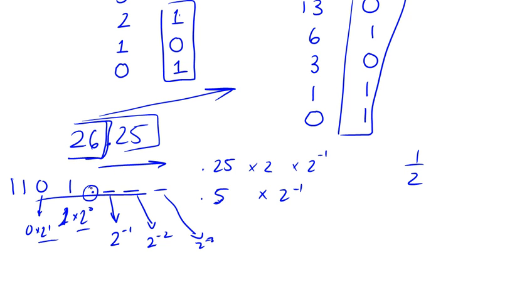And the digits that are to the right of the binary point are basically multiplied by, in this order, 2 to the minus 1, 2 to the minus 2, 2 to the minus 3.